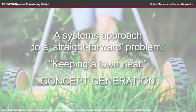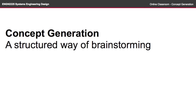In this episode of The Online Classroom, we'll look at concept generation in the systems approach to a straightforward problem: keeping a lawn neat. Concept generation is really a structured way of brainstorming. It is usually conducted after a clear requirements analysis is undertaken. But in this course, we're asking you to come up with three ideas early so that you can apply the systems engineering tools to your group project as we go, though it might be worthwhile going back to the concept generation process once you have a clear idea of what those requirements are.